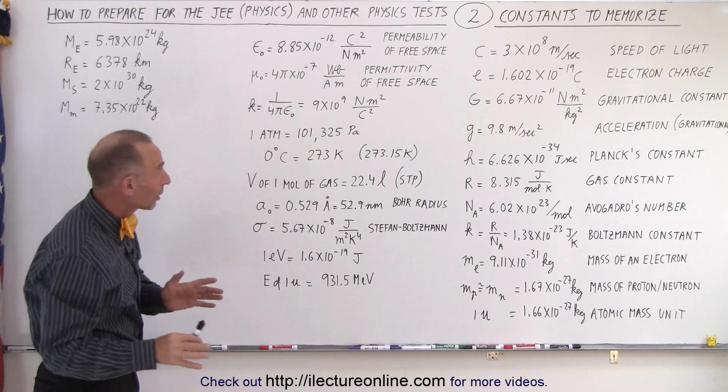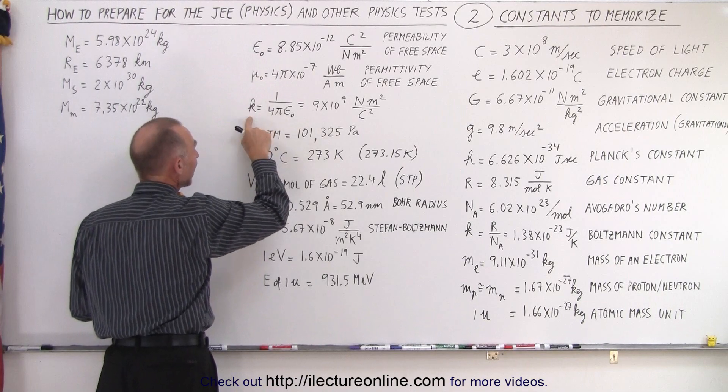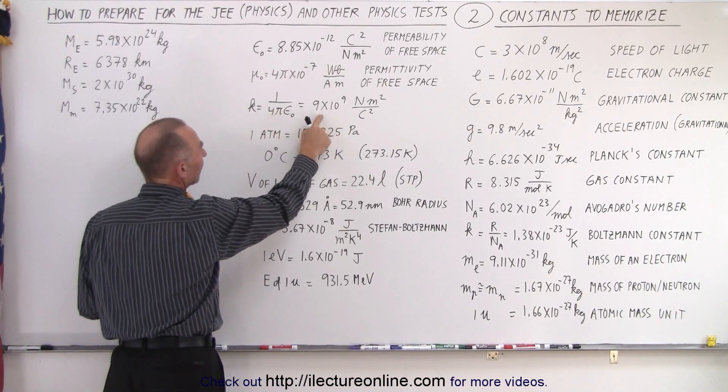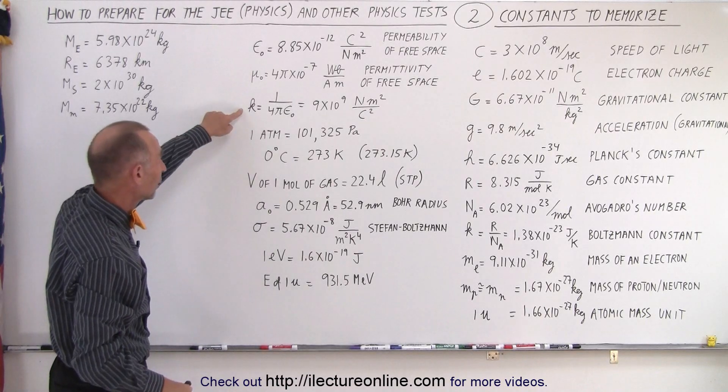Then, sometimes in equations, they write, instead of writing 1 over 4 pi epsilon naught, they write K. And that would equal 9 times 10 to 9 Newton meter squared per Coulomb squared. And we use this equation a lot in Coulomb's law.